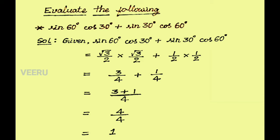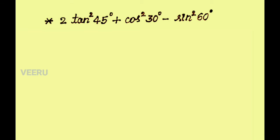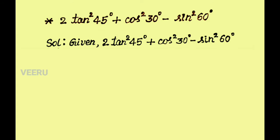See the next problem: 2 tan square 45 degree plus cos square 30 degree minus sin square 60 degree. In the solution, take the given as it is: 2 tan square 45 degree plus cos square 30 degree minus sin square 60 degree.